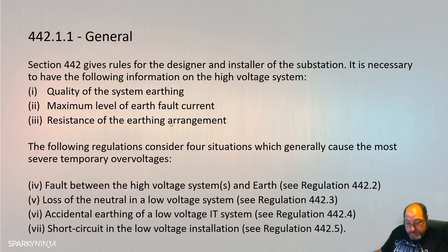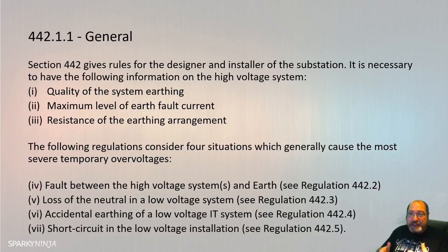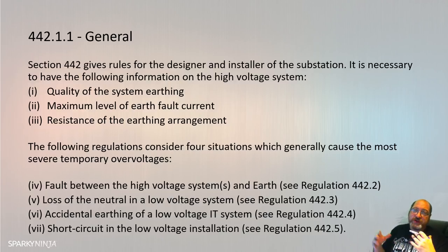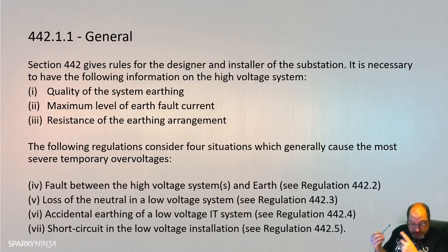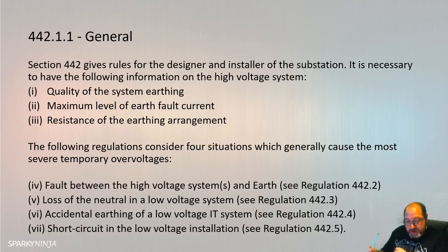Section 442.1.1: section 442 gives the rules for the designer and installer of a substation, so immediately for most of you that's going to be a concern. We'll just cover this for completeness. It is necessary to have the following information on the high voltage system: the quality of the system's earthing, maximum level of earth fault current, and the resistance of the earthing arrangement. The regulations consider four situations: fault between the high voltage system and earth, loss of neutral, absence of the low voltage IT system, and short circuit in the low voltage installation.